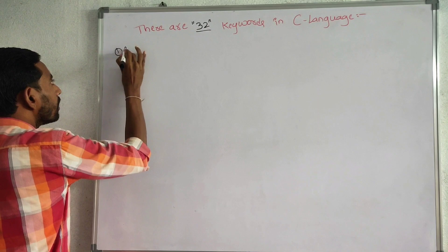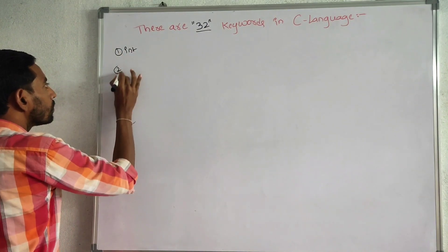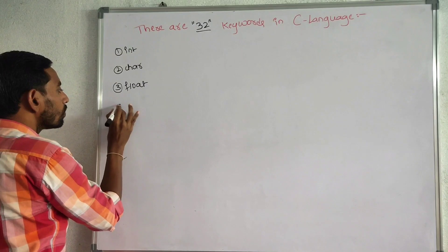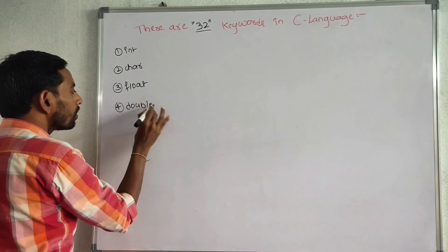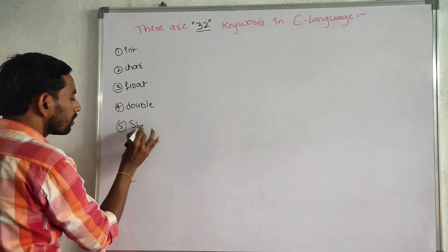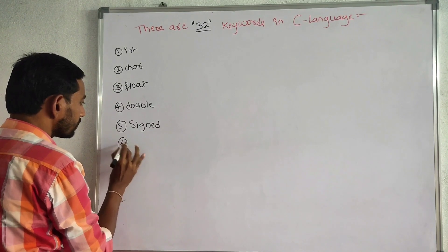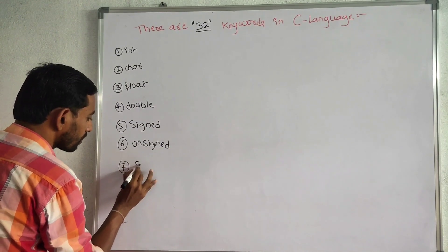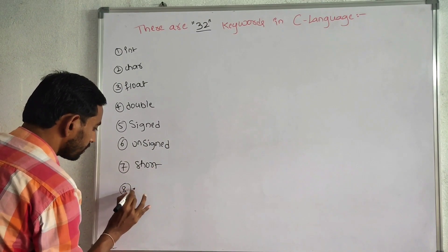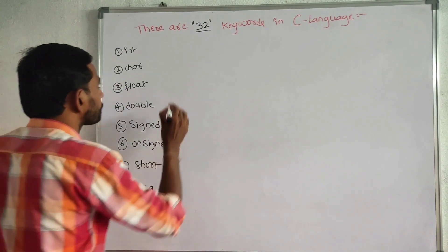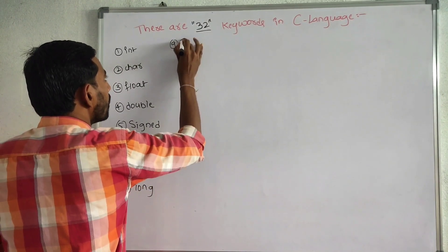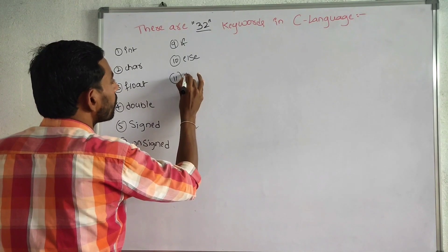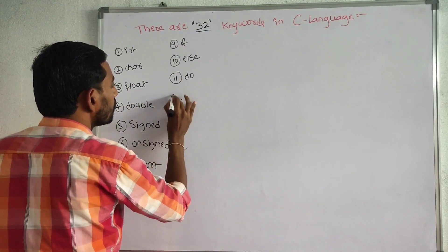The 32 keywords in C language are: 1. int (integer), 2. char (character), 3. float, 4. double, 5. signed, 6. unsigned, 7. short, 8. long, 9. if, 10. else, 11. do, 12. while.